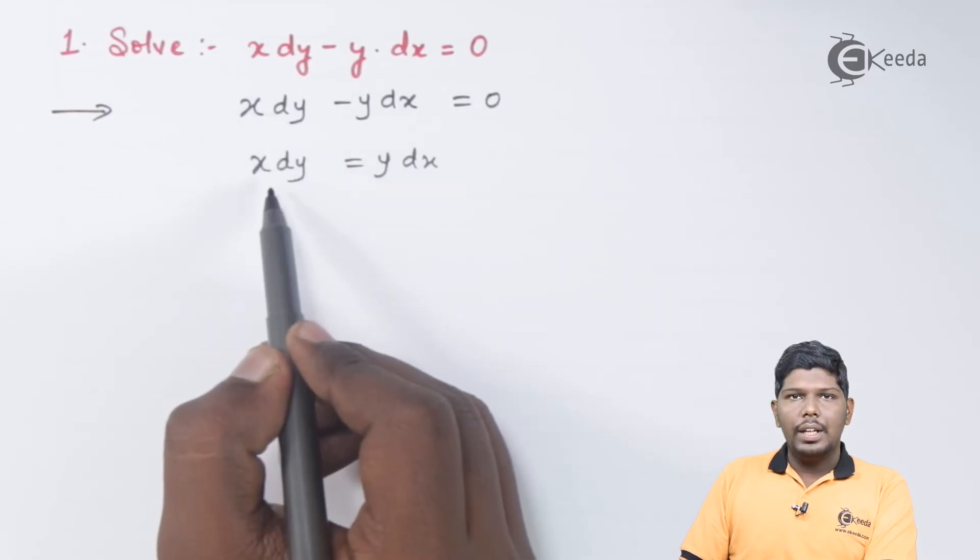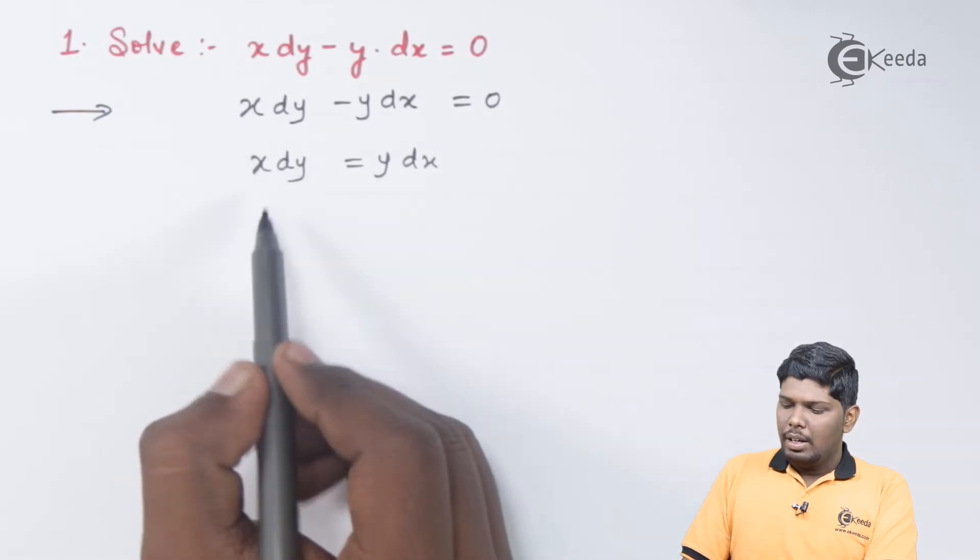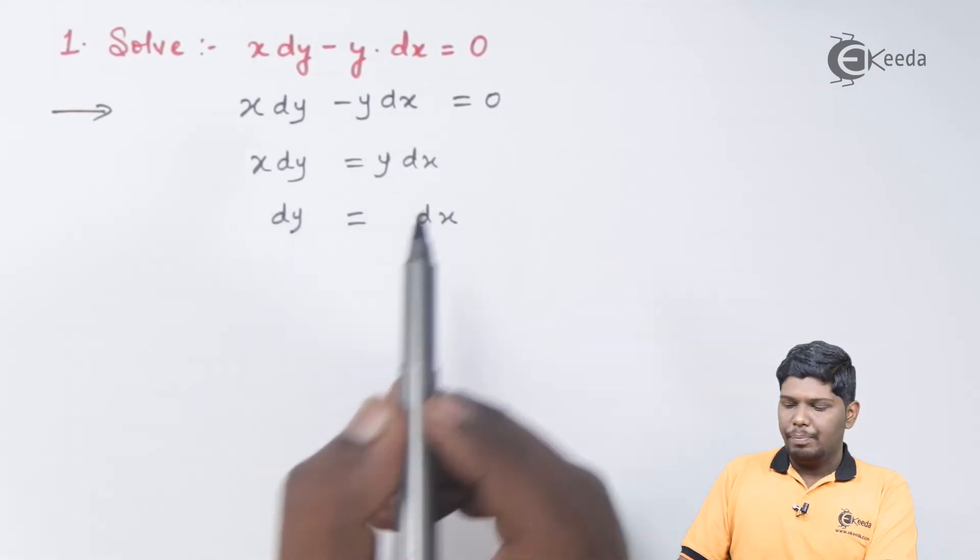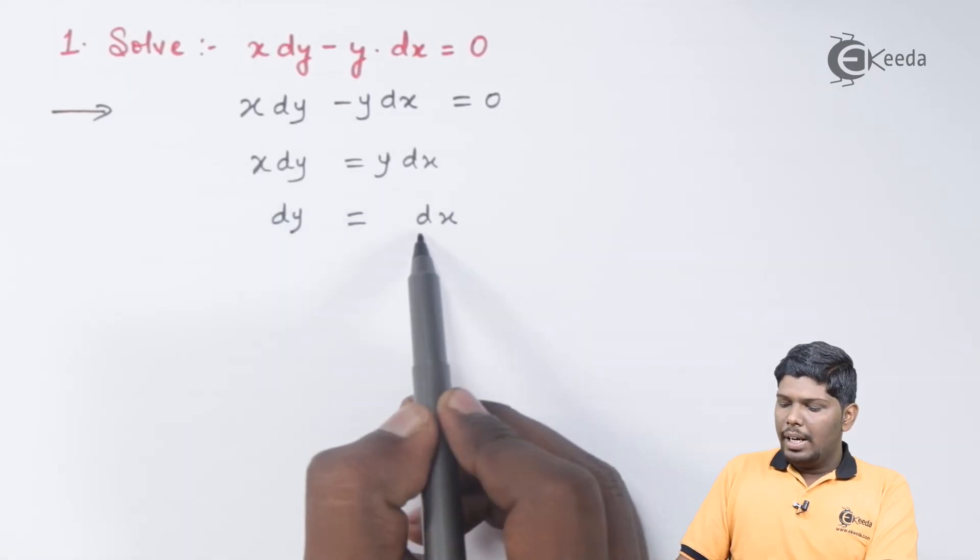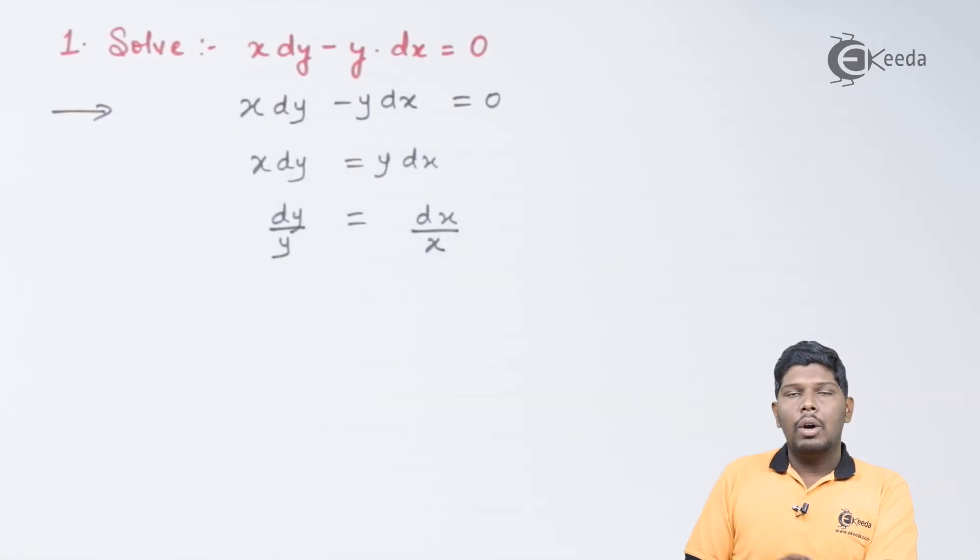We have x dy on the left-hand side and y dx on the right-hand side. Here you can see x and y are in mixed form. So the next step will be taking dx and dy in the numerator only. We are interchanging the variables. We have dy here and on the right-hand side, we have dx.